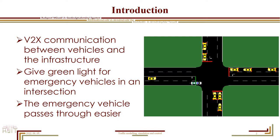V2X enables communication between a vehicle, for example, to another vehicle, to a cloud, or to an infrastructure. In our homework, the task was to turn the light green for an emergency vehicle when it approaches the intersection. This will help the vehicle pass the intersection more easily, because it claims the road ahead and blocks traffic from the other ways.